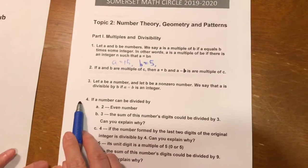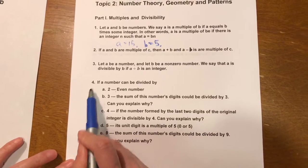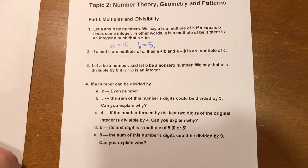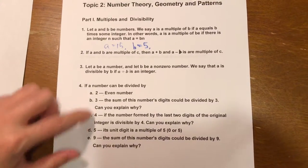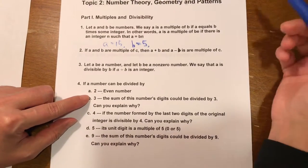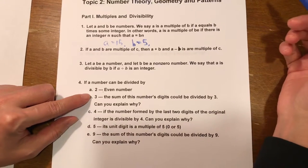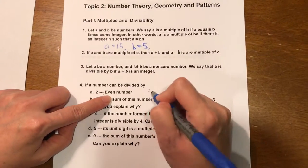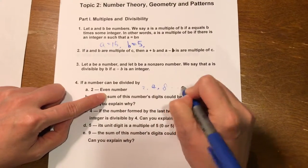So number 4 is a list of rules that we can check whether a number can be divisible by these numbers. First one is number 2. Any number can be divided by 2 if they're even, say 2, 4, 8, and so on.